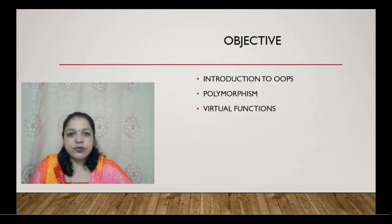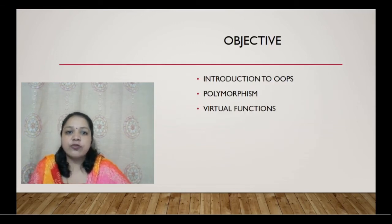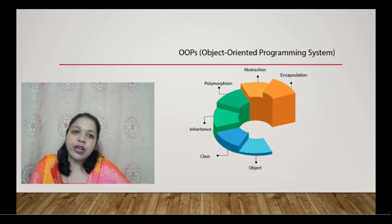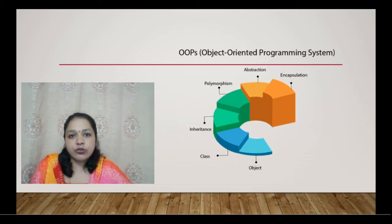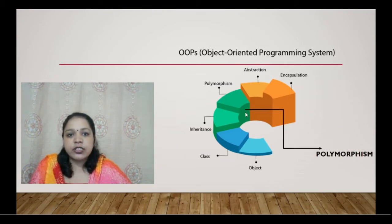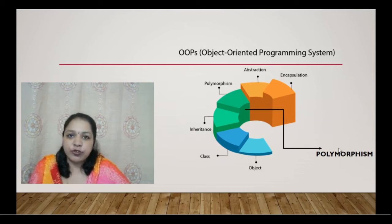In this session we will have an introduction to OOP concepts and polymorphism. Object-oriented programming systems like C++, Java, and .NET implement concepts including classes, objects, inheritance, polymorphism, abstraction, and encapsulation. Today's session deals with polymorphism, one of the key concepts of OOP.